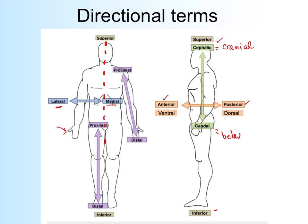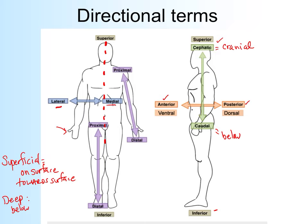Superficial and deep are not on this picture but are important terms. Superficial means on or close to the surface, as it would in common language. Deep means found below the surface. For example, the skin is your most superficial organ. The muscles are deep to the skin. The most superficial layer of the skin is the epidermis; deep to that is the dermis.